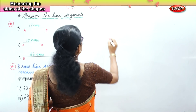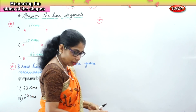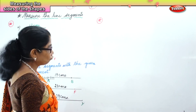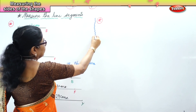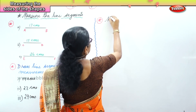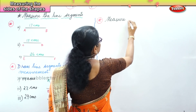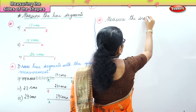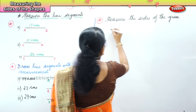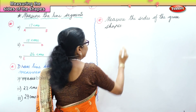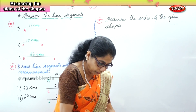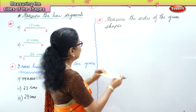Measure the size of the shapes — that's the third activity we are going to do. I have some shapes for you and you are going to measure those shapes. I have got shapes for you to measure.